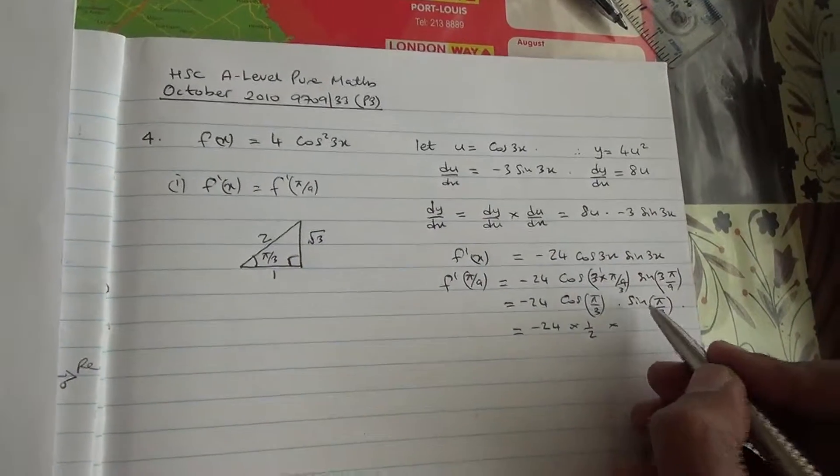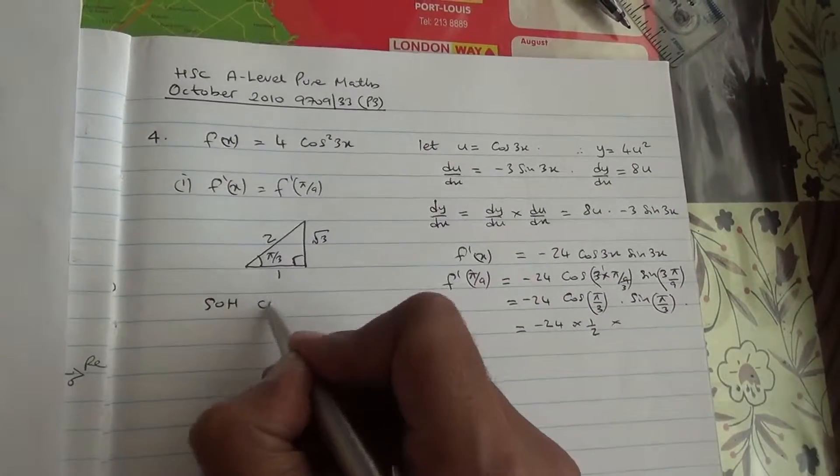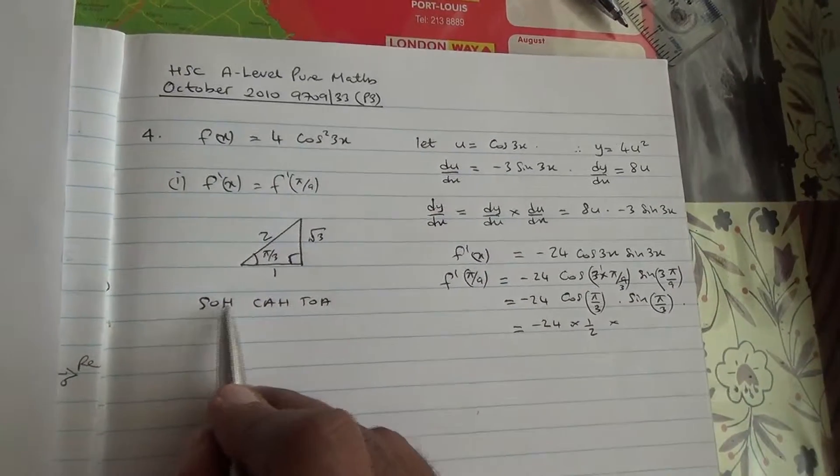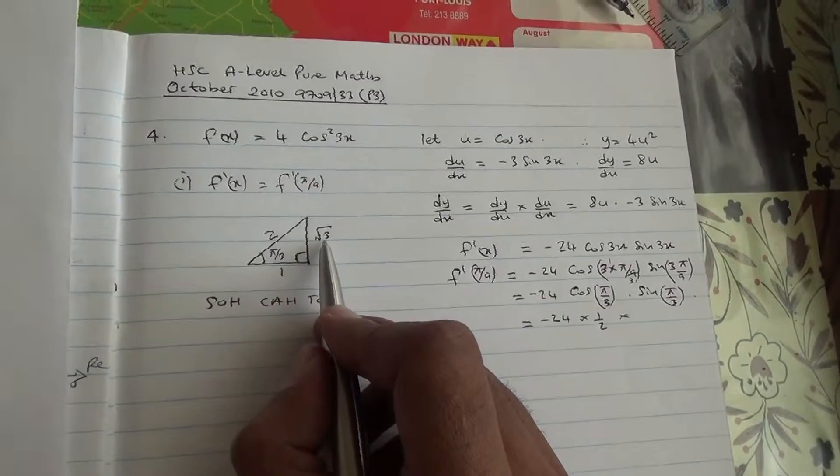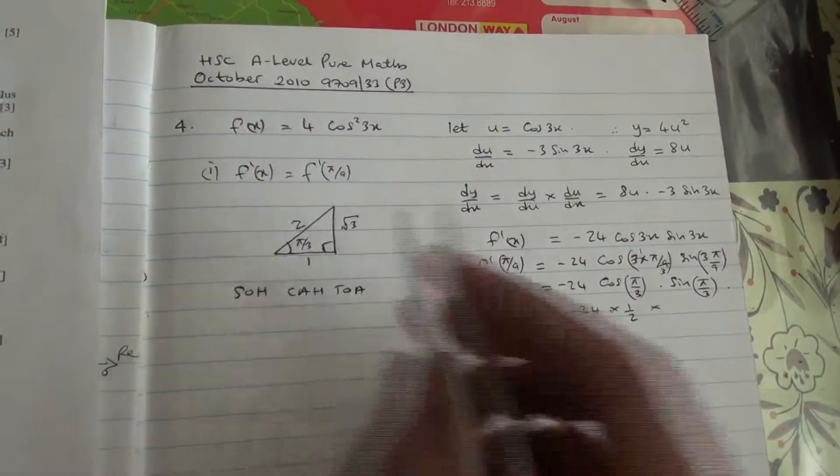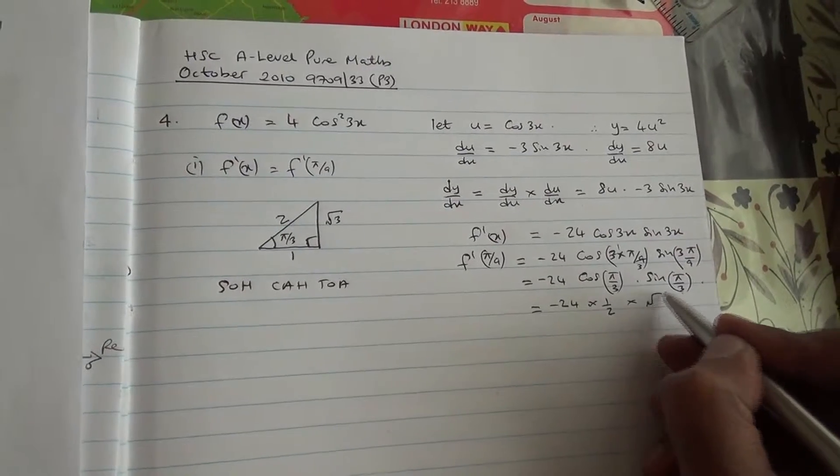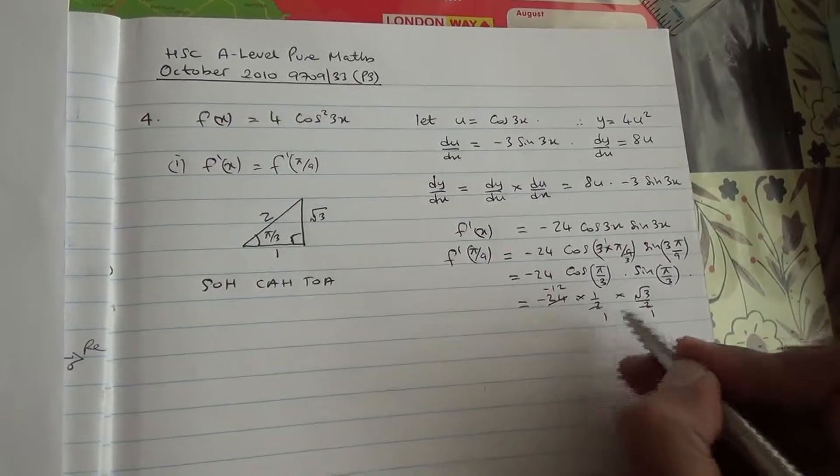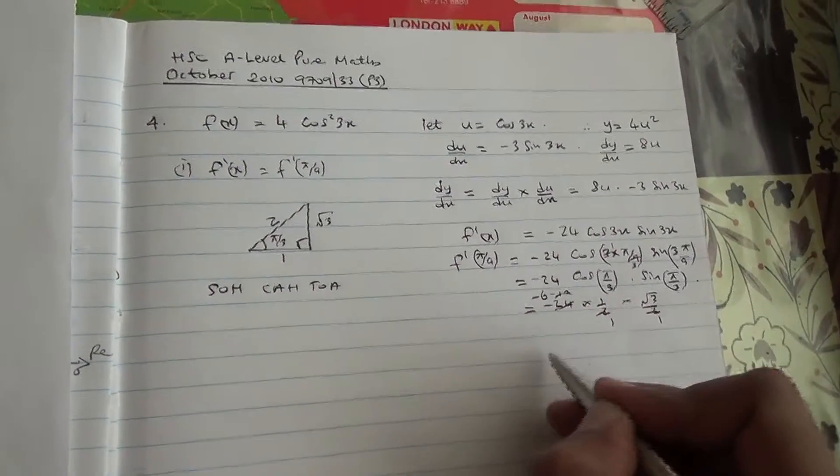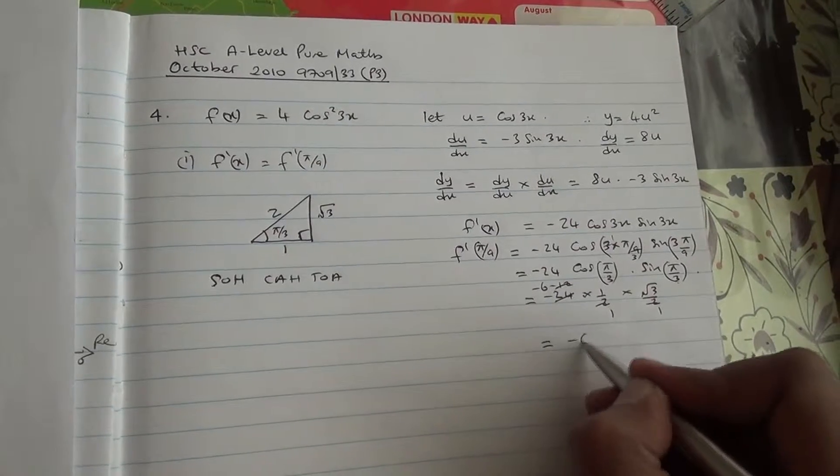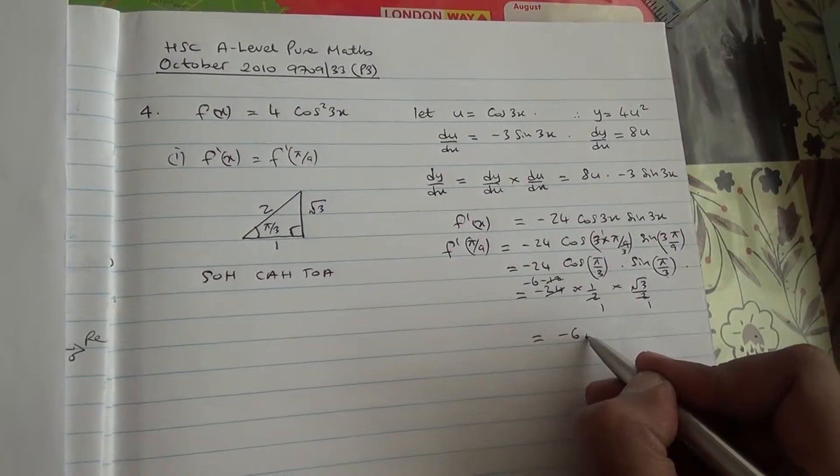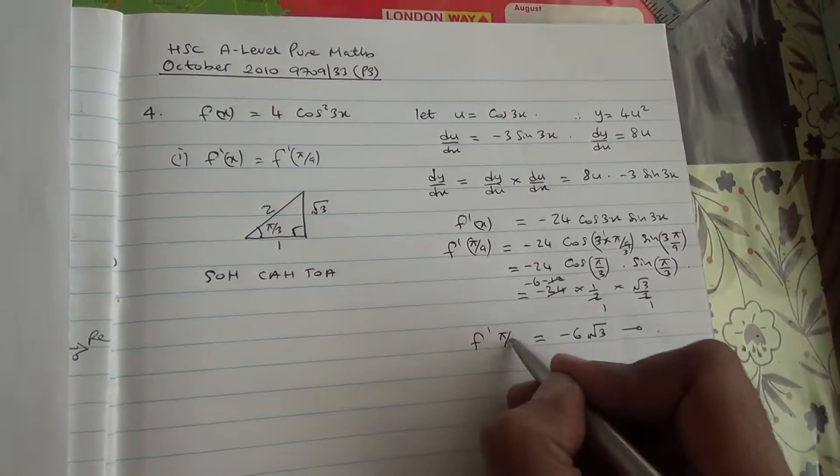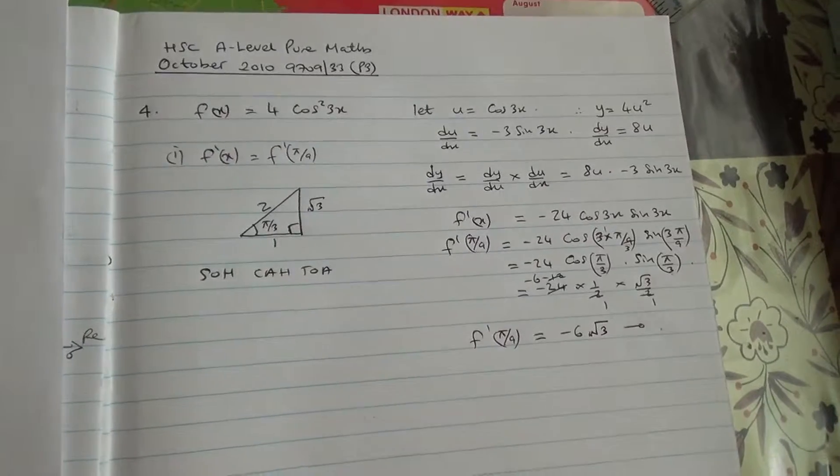Therefore, the sin of, we're going to be using SOHCAHTOA. The sin is opposite over hypotenuse. This is your opposite, root 3, over the hypotenuse 2. So sin of π/3 is root 3 over 2. 2 goes into 2, giving minus 6. Therefore, the exact value is going to be minus 6 root 3. Here we are for f dash π/9. First part done.